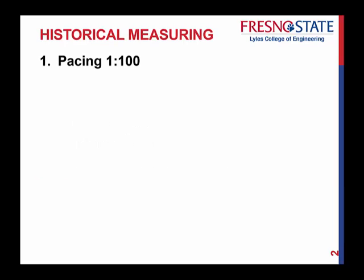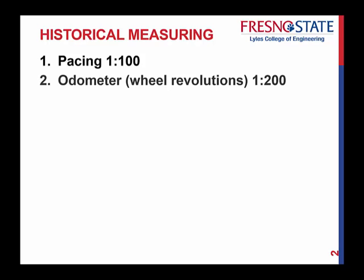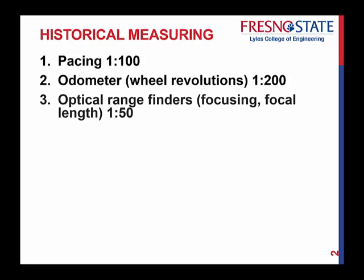So historically, we talked about pacing that can get you accuracies of 1 in 100. Using an odometer, that's a wheel that you push around, you can get as close as about 1 in 200. Optical range finders, where it uses focusing and changing focal length, you can get to be about 1 in 50. So not perfect, but good. Tachiometry, that's using stadia. We didn't go over stadia, but it's another method that could be used to get you pretty accurate distances, and that was about 1 in 500.